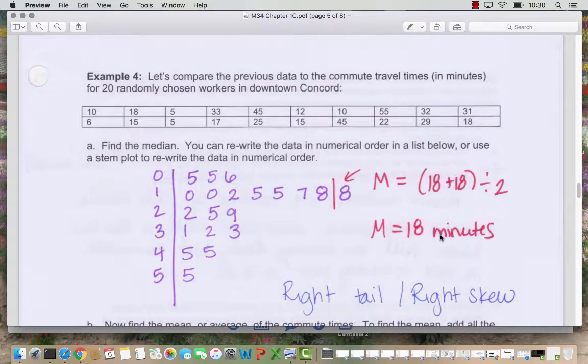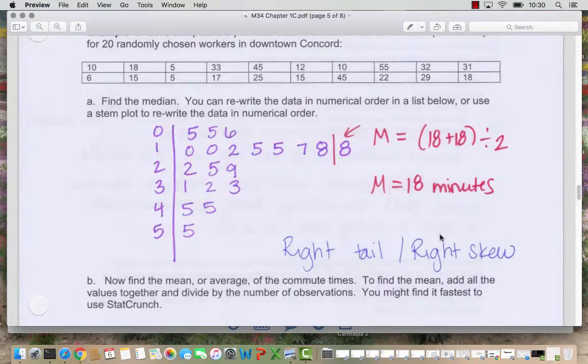So let's look at example four. These are commute times for workers in Concord. Again randomly chosen and again 20 workers. So we want to find the median. So I wrote a stem plot here again. My stems are the tens place. My leaves are the ones place. So you can see there are two workers who have a five minute commute. One worker who has a six minute commute.